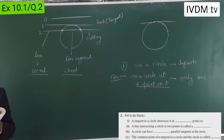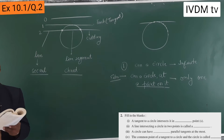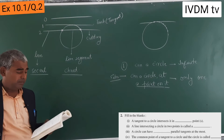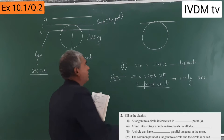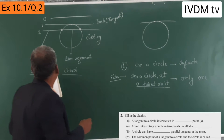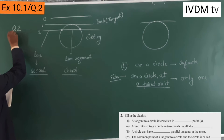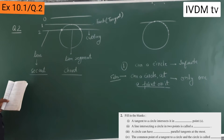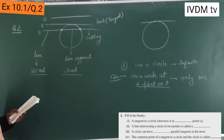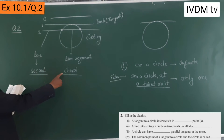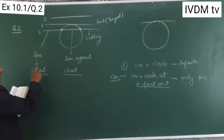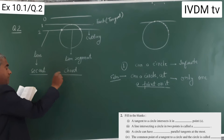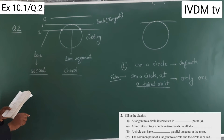A circle can have parallel tangents at the most — so parallel tangents at the most, what does it mean? This was question number 2, first part: a tangent to a circle intersects in one point; a line intersecting a circle in two points is called a secant line.